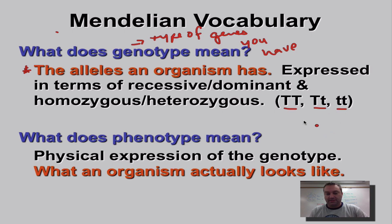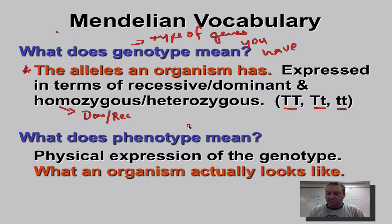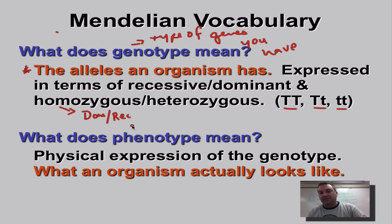When you use the word homozygous, you have to specify if it's homozygous dominant or homozygous recessive. If it's heterozygous, you can simply say heterozygous — you do not have to say 'heterozygous dominant' because that's redundant. When you say heterozygous, you've already told the person it's one big letter and one small letter. Make sure you remember: when you use the word homozygous, you must follow it with dominant or recessive.